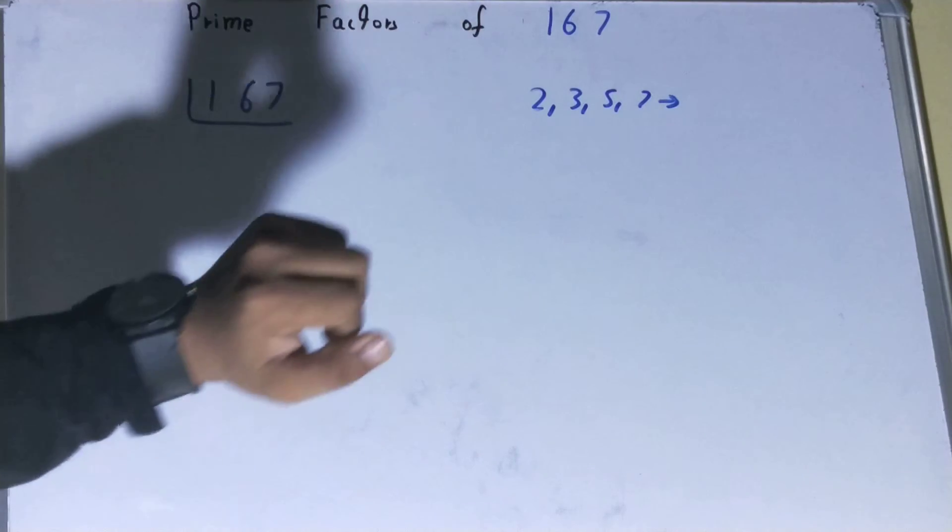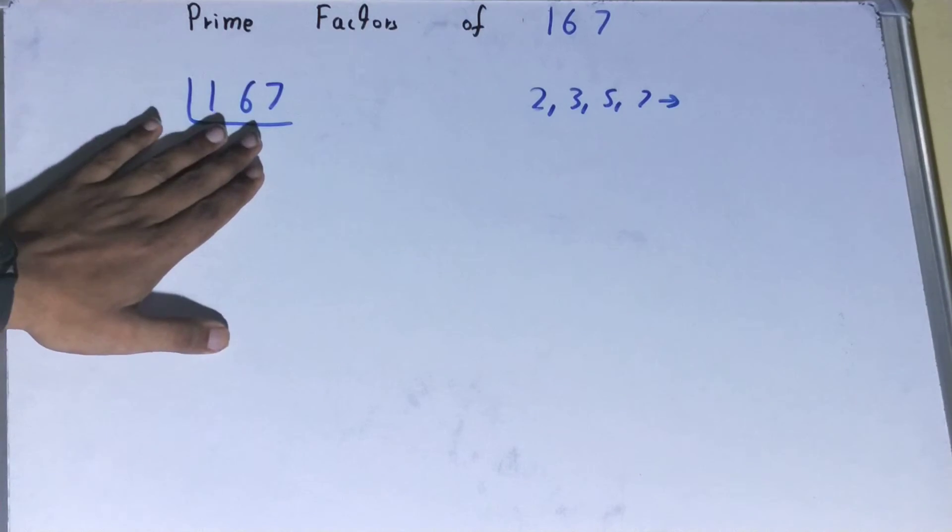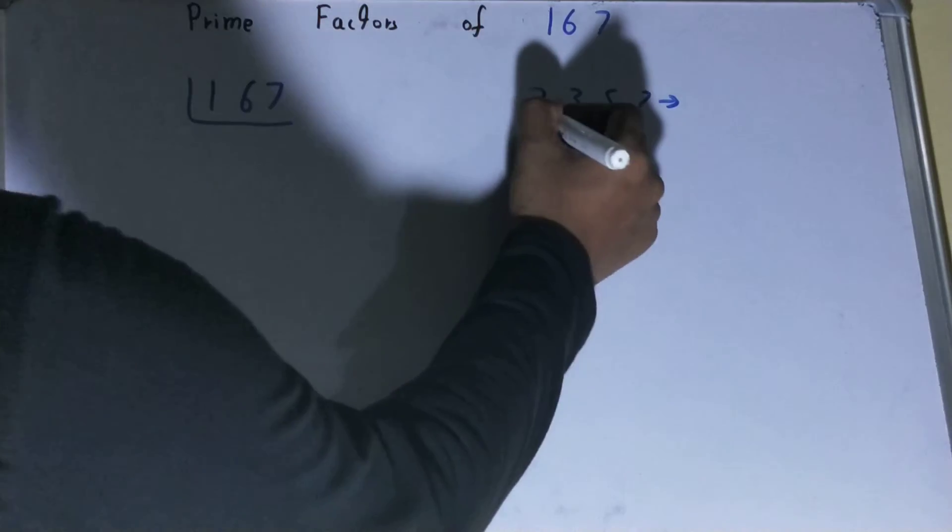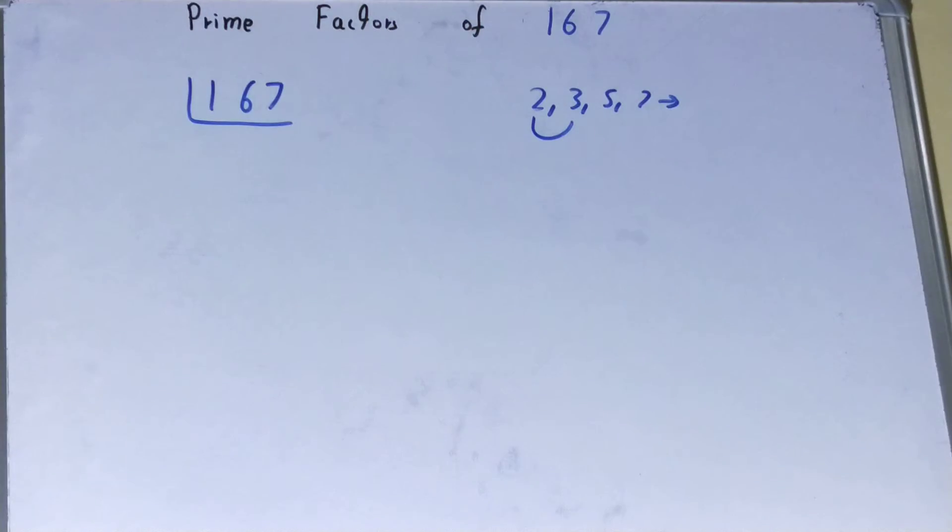We'll start with the lowest prime number that we have, that is two. Is 167 divisible by two? Clearly not, because 167 is an odd number. So what we'll do, we'll go to the next lowest prime number that we can have, that is three. Is 167 divisible by three? No. Not with five, not with seven, not with any other prime number.